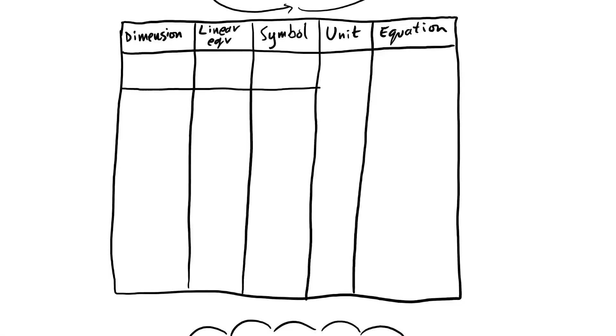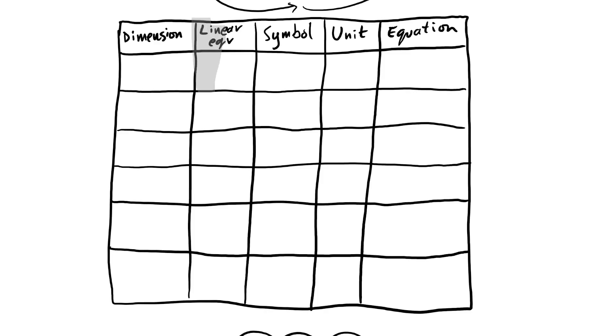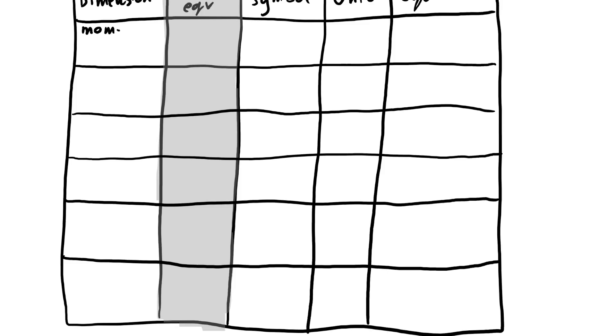So here we go. I'm going to try and fit everything you need to know for engineering physics onto one piece of paper virtually. Let's start with rotational dynamics, that is the physics of spinny things. I'm going to make a table here. So we have the actual rotational dimension, the linear equivalent, symbol, unit and equation.